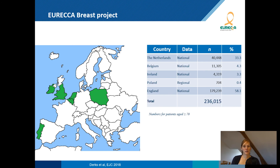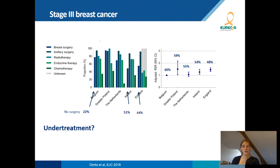An example of such an analysis is the Eureka breast project, performed in Europe across five participating countries. It looked at treatment differences and differences in outcome in breast cancer patients aged 70 years or older. For instance, rates of surgical treatment differ strongly between countries — almost 80% of patients in Belgium receive surgery compared to approximately 50% in Ireland. Similarly, almost no patients in the Netherlands receive adjuvant chemotherapy, compared to around 40% in Poland. These large differences across Europe can be used to examine differences in outcome.